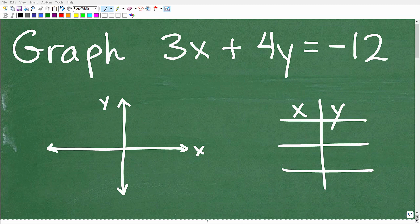Okay, let's learn how to graph the line 3x plus 4y equals negative 12.